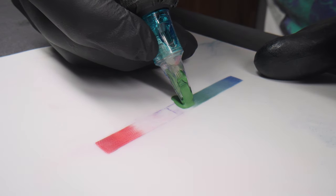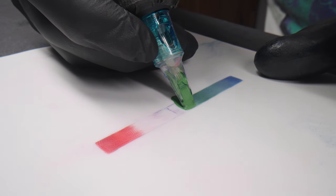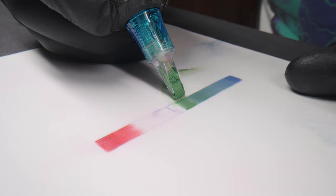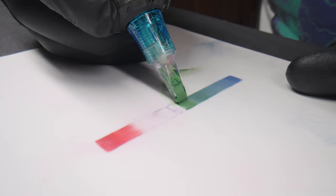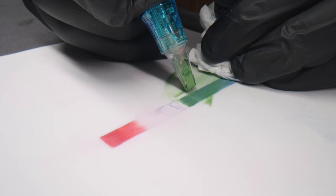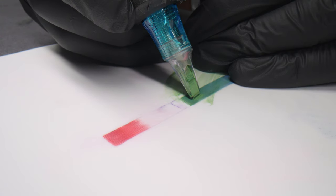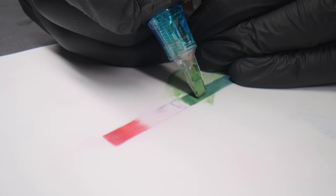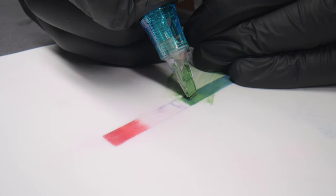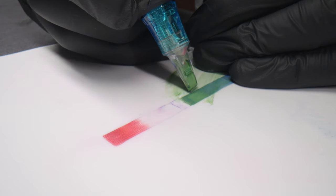The needle depth varies depending on the body area and skin type. With practice, you develop a sense of how deep to tattoo, ensuring to approach the correct depth cautiously before going too deep. Additionally, it's crucial that the needle is set far enough from the needle module to work precisely and adjust the depth. Practice makes perfect.